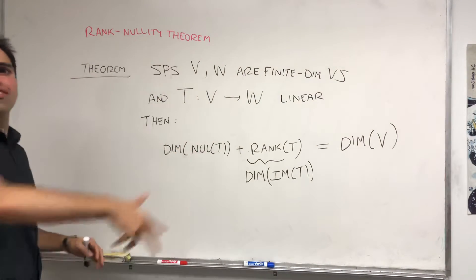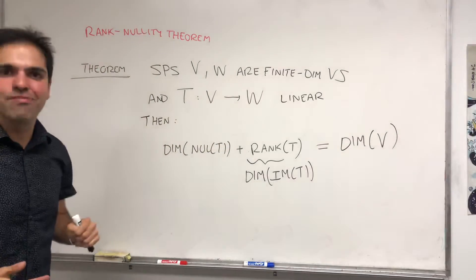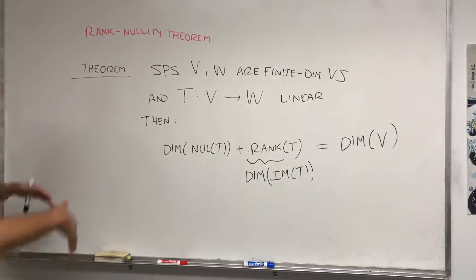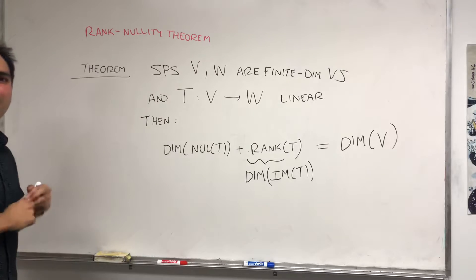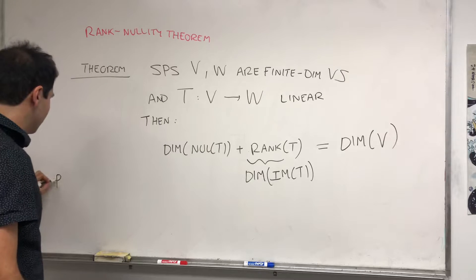If it sends lots of vectors to zero, then it cannot have a big image. If it has a big image, it cannot send lots of vectors to zero. And without further ado, let me prove this.